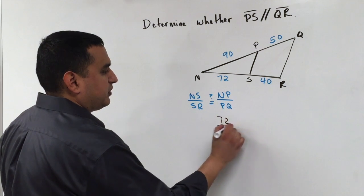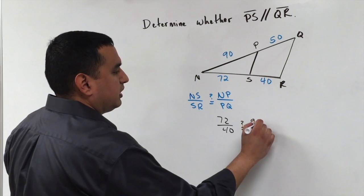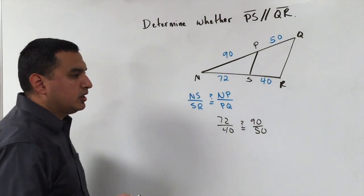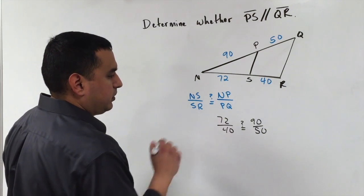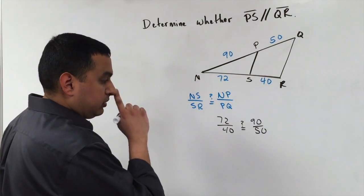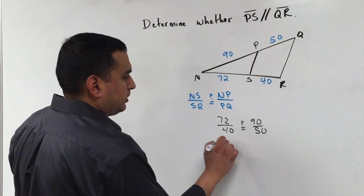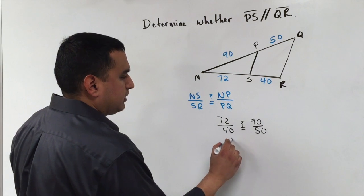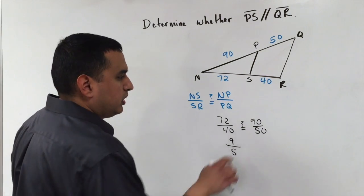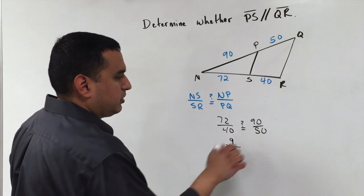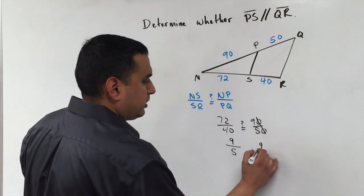Obviously, 72 over 40, I'm asking, is that equal to 90 over 50? I can reduce the 72 over 40 by factoring out. If I factor out an 8, I get 72 divided by 8 is 9, 40 divided by 8 is 5, I'll reduce. And since these are both ending in 0, I can factor out 10, and this comes out to 9 over 5.